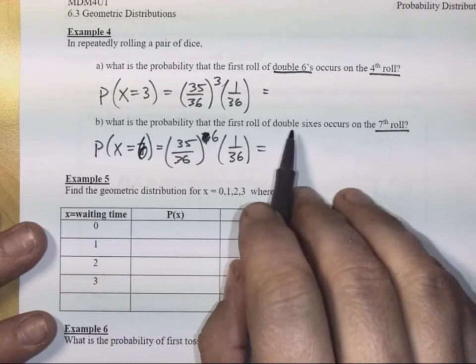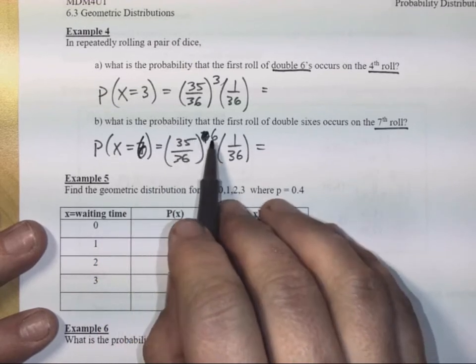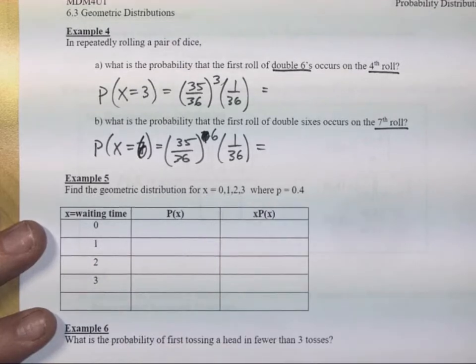I caught it. I hope you guys caught it too. So the probability that it happened on the seventh roll means we waited six times, failure raised to the six, multiplied by one in 36 equals, and you can figure that out.